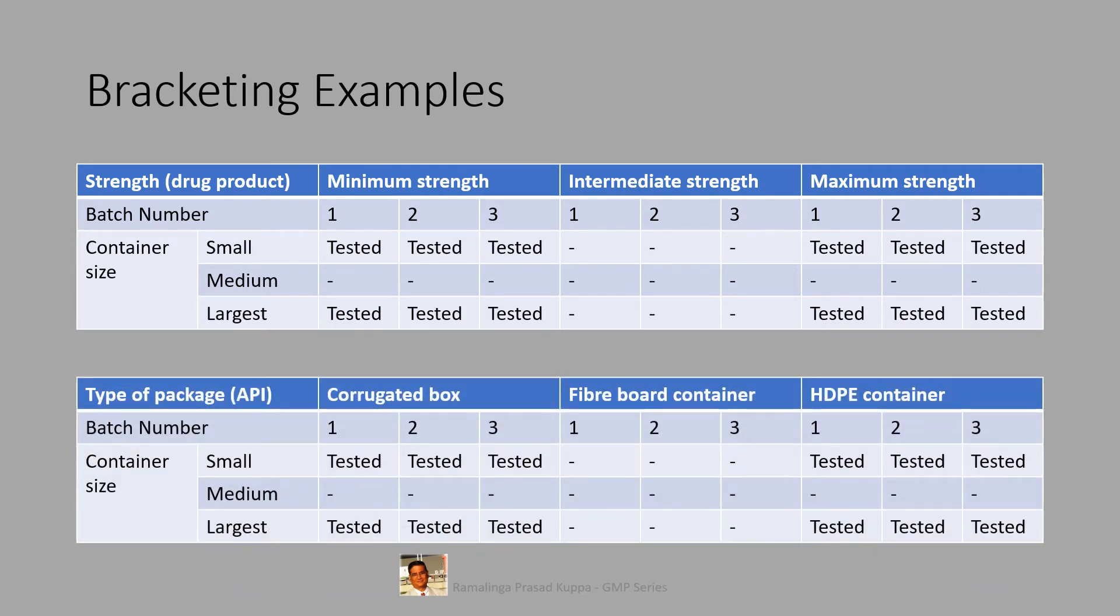As discussed earlier, the model for API could be like this. The least protected corrugated box and most protected HTP container. Also, the smallest pack size and the largest pack size is also considered for bracketing design for APIs.